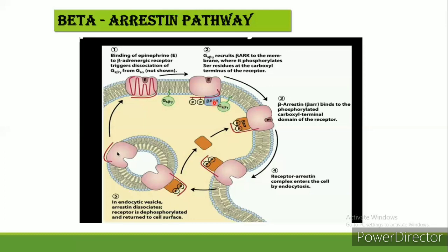The Gs beta-gamma recruits beta-ARK to the membrane, where it phosphorylates the serine residues at the carboxyl terminus of the receptor. Beta-ARK is drawn to the plasma membrane by its association with the Gs beta-gamma subunit. It then phosphorylates the receptor, and this phosphorylation creates a binding site for beta-arrestin, also called beta-ARR or arrestin-2.